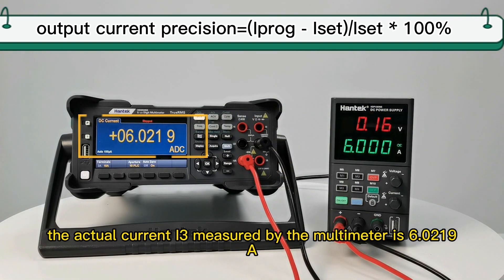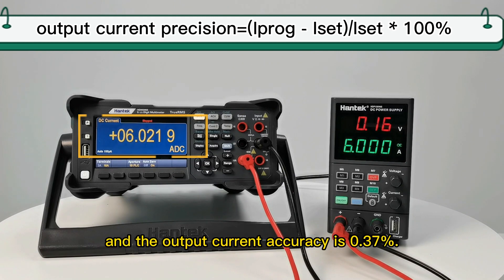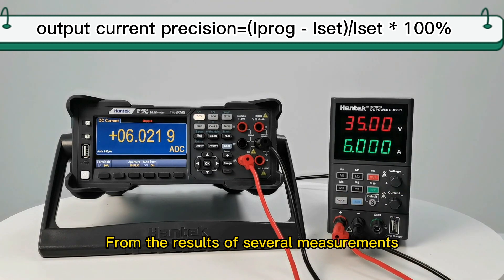The actual current I3 measured by the multimeter is 6.0219A, which is brought into the formula. The output current accuracy is 0.37%.